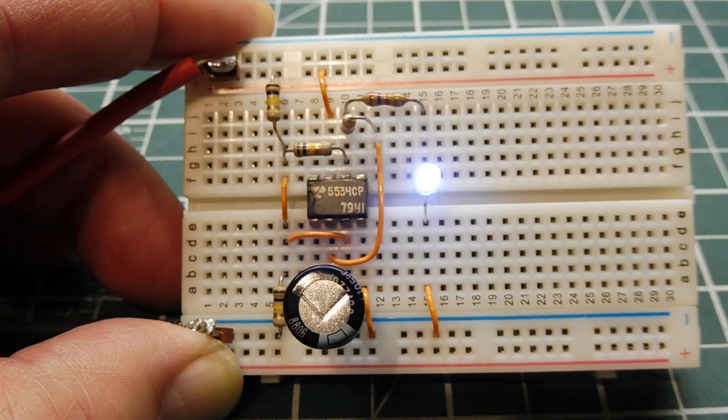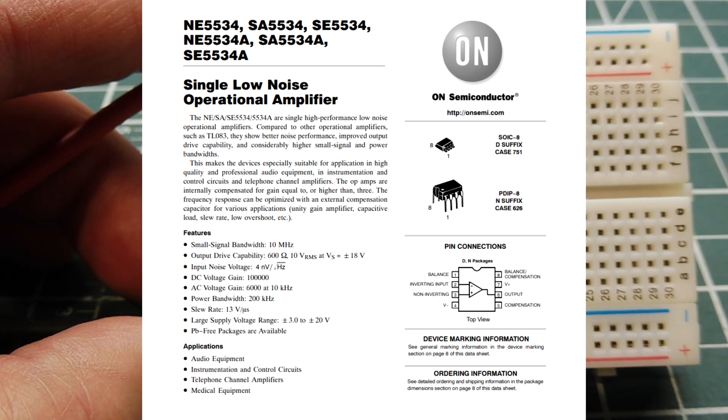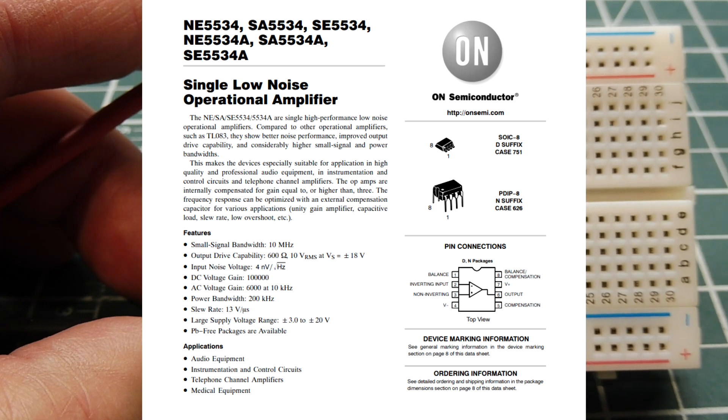Now, the op-amp I'm using is the NE5534, which you can see on my breadboard. It's a low-noise, high-speed op-amp. It has a high slew rate of 13 volts per microsecond and has a good output drive.